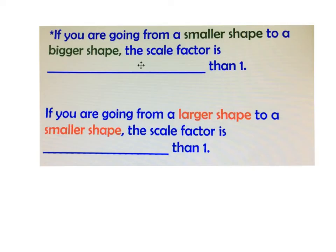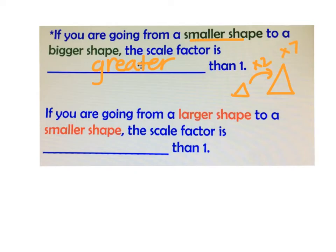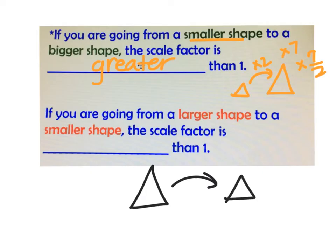When working with scale factors: if you're going from a smaller shape to a bigger one — an enlargement — the scale factor must be greater than 1. Examples would be times 2, times 7, or times 7/2, because those are bigger than 1. If you're going from a larger shape to a smaller one — shrinking it down — the scale factor should be less than 1. An example might be times 1/3, which is the same as dividing by 3, or times 1/4. Please put these in your notes.